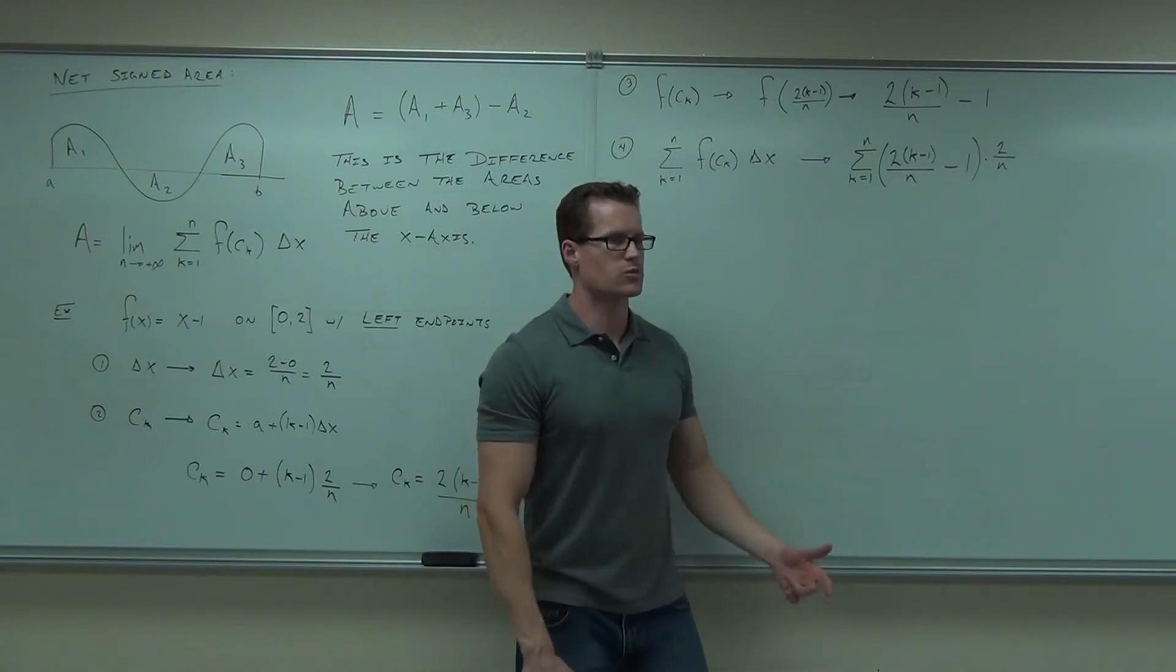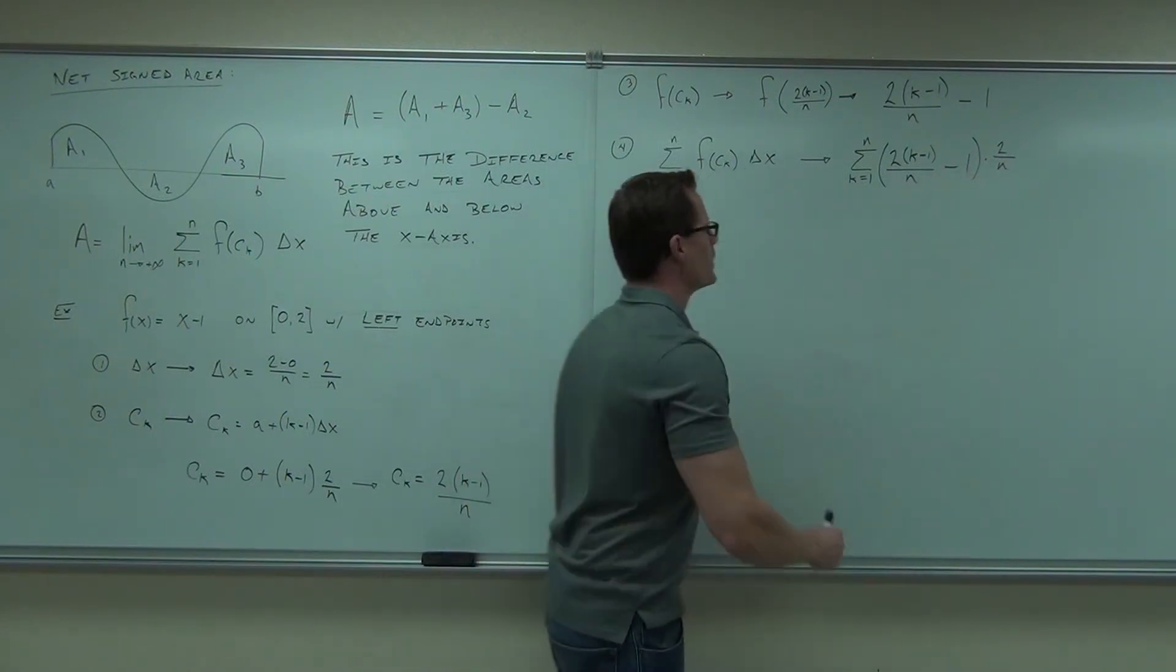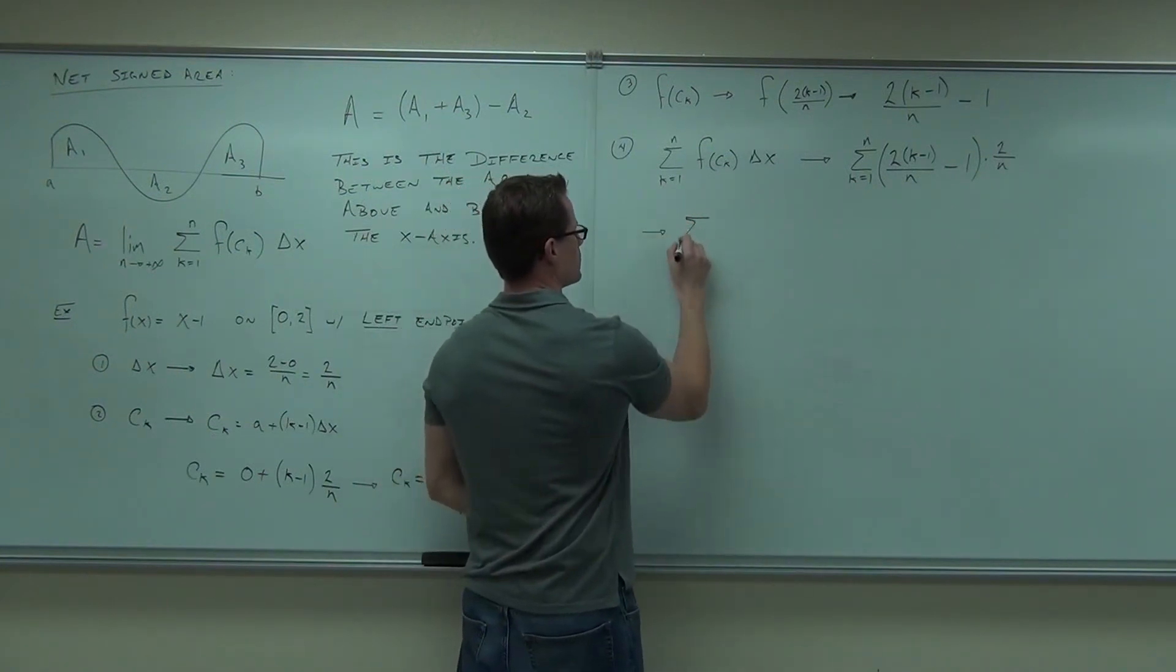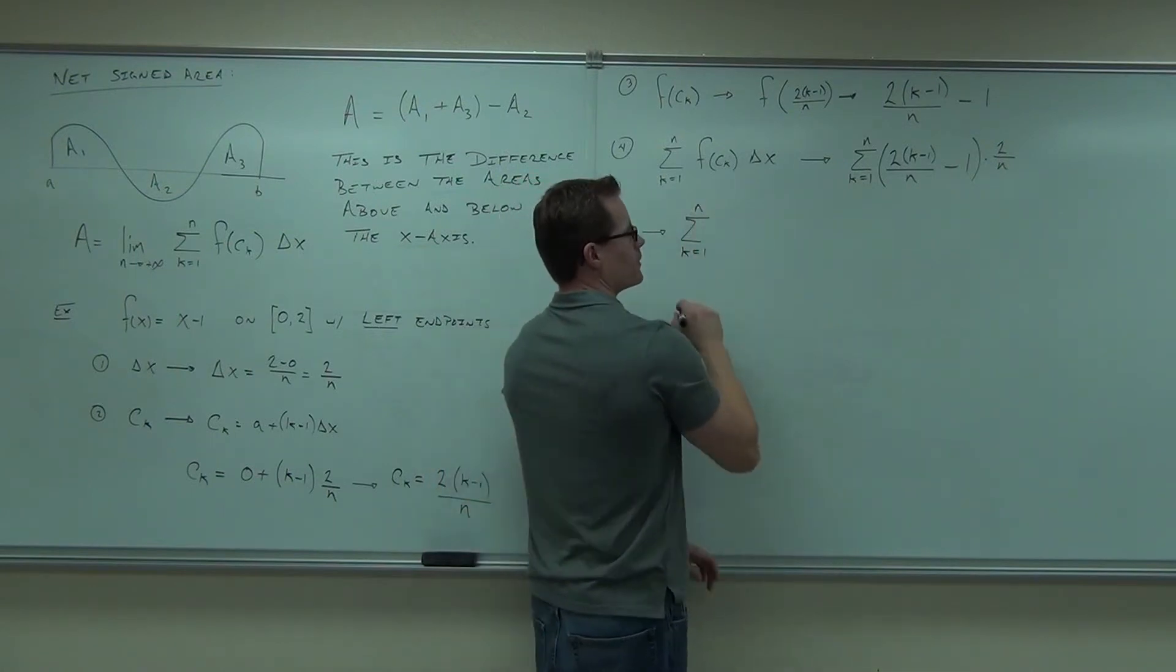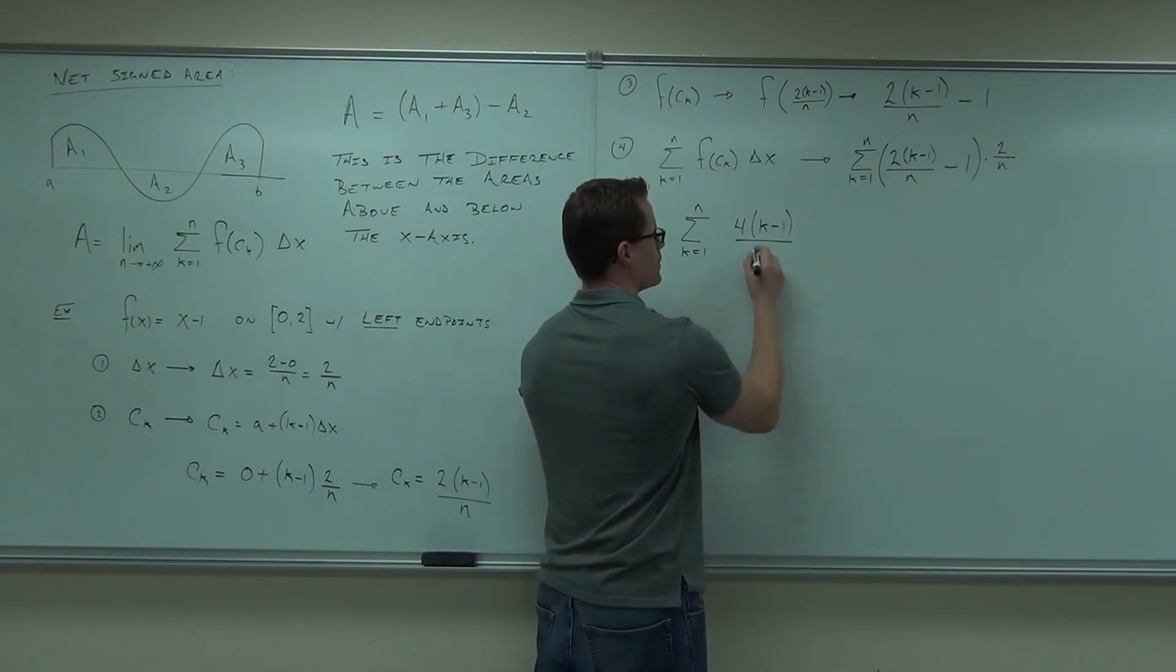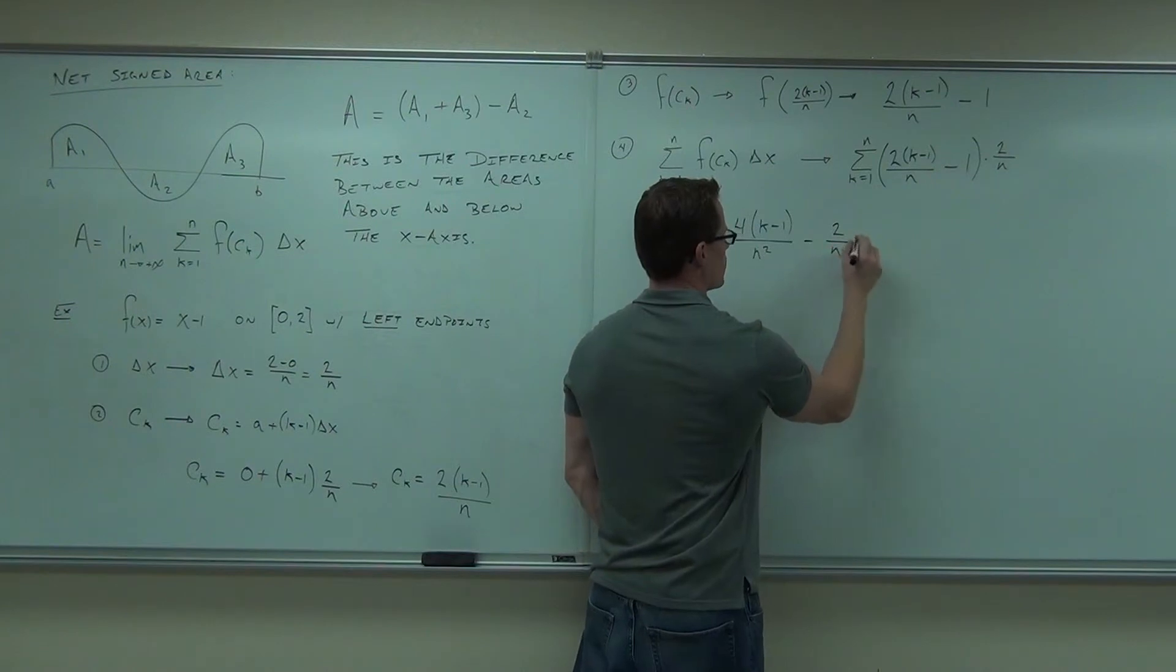Well, now you work with it, now you do some algebra, probably have to distribute that, you do have to distribute this one. So we're going to get, stick with me here folks, 4k minus 1 over n squared, minus 2 over n.